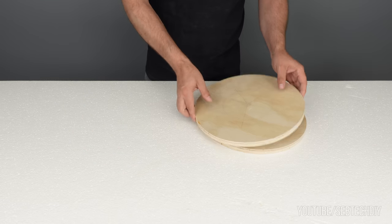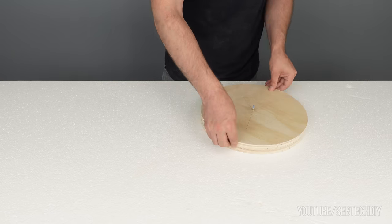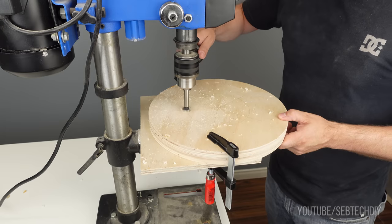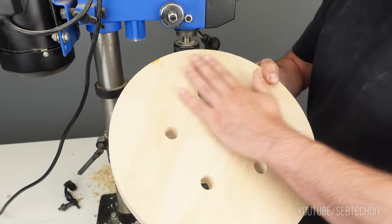I only made the marks on one of the two circles, but that's okay because I will stick them together using CA glue. So when drilling the five holes using a 3/4 Forstner bit, both pieces will align perfectly.